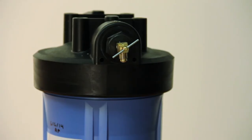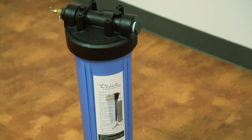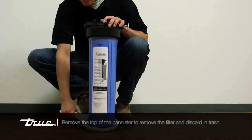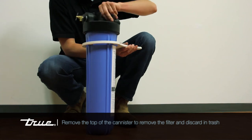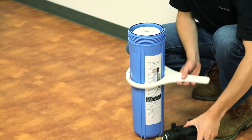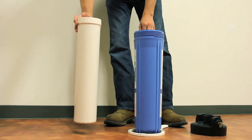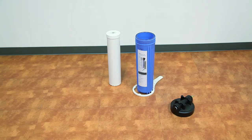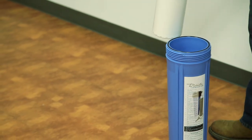To replace the filter cartridge, open the needle valve to let the pressure equalize. Using the filter wrench, remove the top of the tank and discard the filter. Install the new filter and tighten the top.